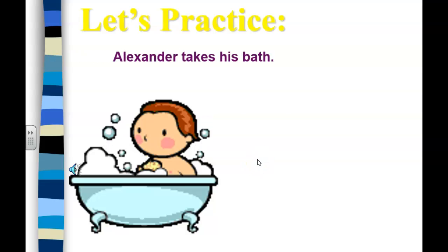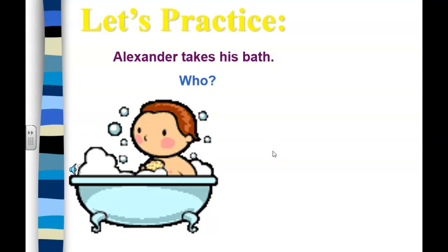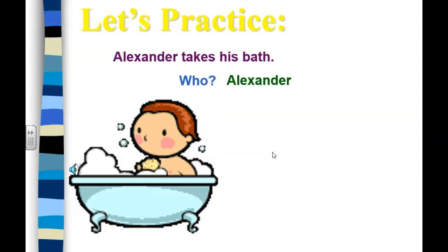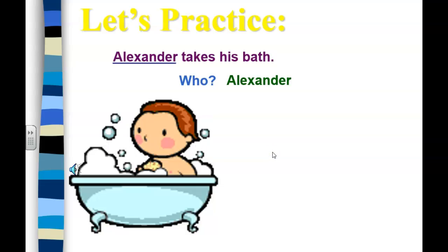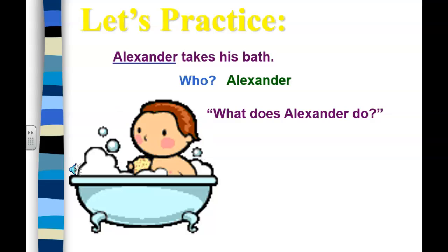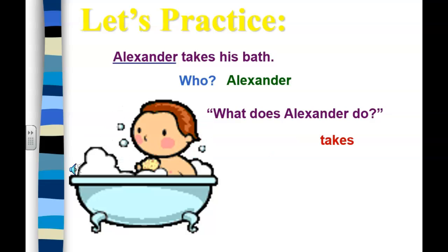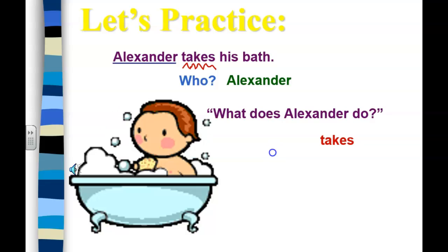'Alexander takes his bath.' Who's the sentence about? Alexander. We can underline the subject. What does Alexander do? He takes. That's our verb.